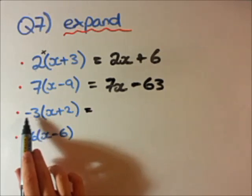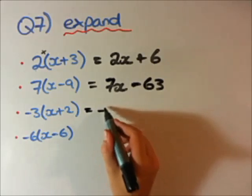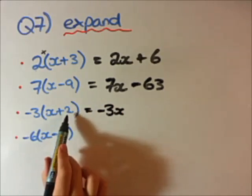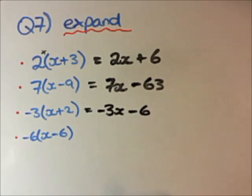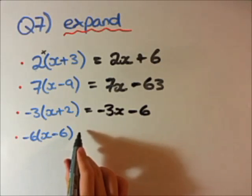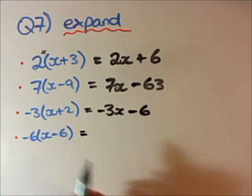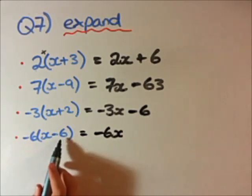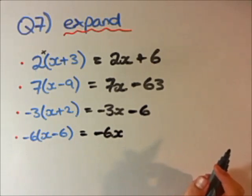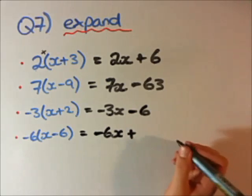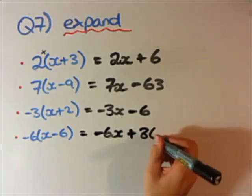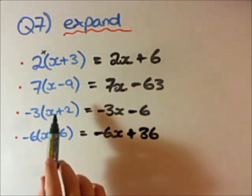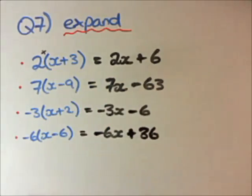The third one, we'll go minus 3 times x, that's just minus 3x, and then minus 3 times 2, that'll be minus 6. And the last one, we'll go minus 6 times x, so minus 6x, and minus 6 times minus 6. Two negative numbers multiply will give a positive number, and 6 times 6 is 36. So there are our four answers for expanding these algebraic equations.